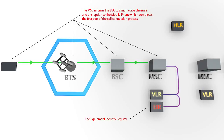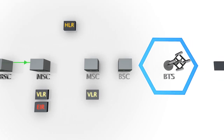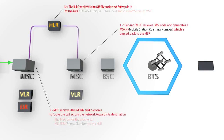Once this information has been authenticated, the MSC informs the device that the connection can continue, and instructs the BSC to assign voice channels and encryption for the call. At this point, the HLR uses the recipient's phone number to search for their associated IMSI and current location.